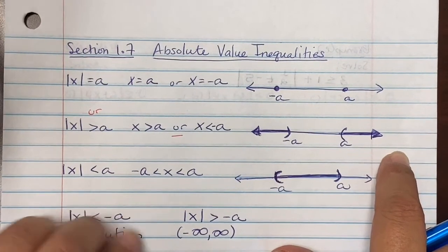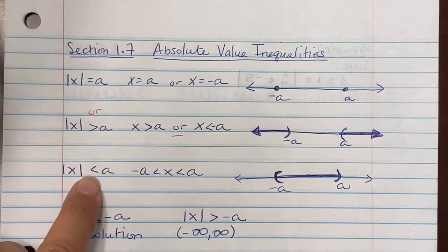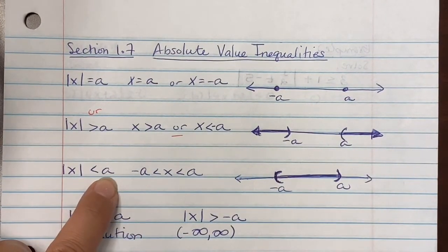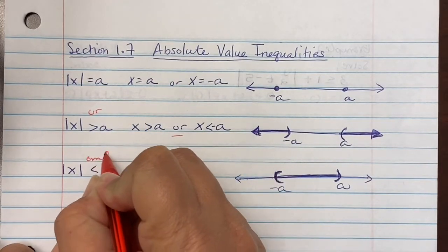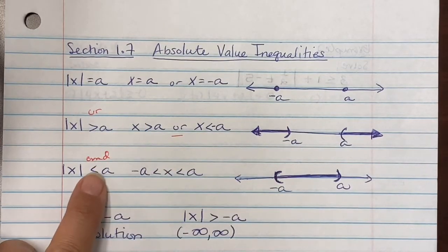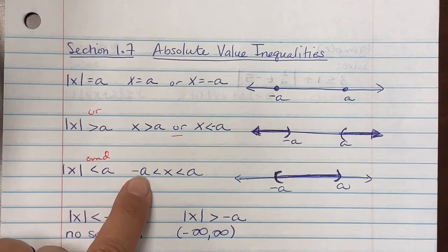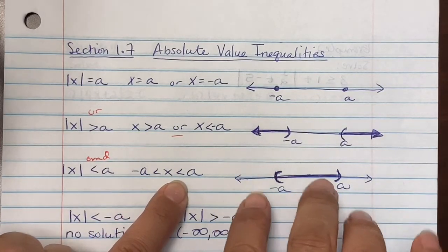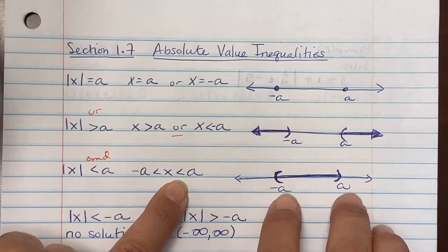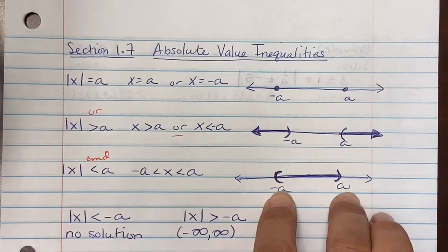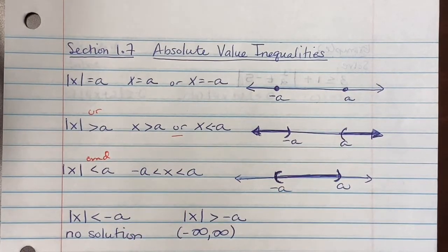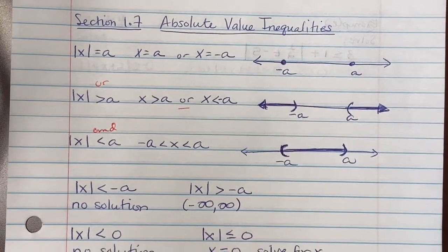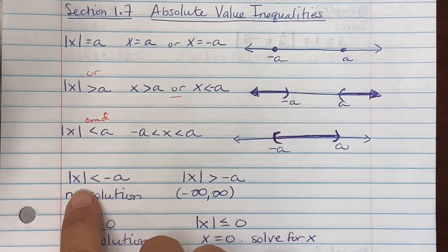When we see absolute value of x less than a, this is known as our 'and' statement — it's our intersection. So it's negative a less than x less than a, meaning you're bounded between the values of negative a and positive a.